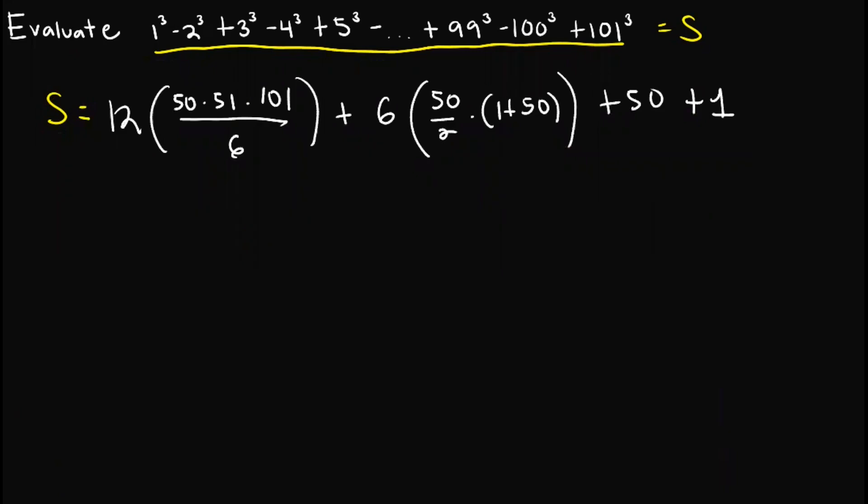So as you can observe here, this is just basic arithmetic that we need to do in order to solve the outcome for this problem. Now I will leave this to you as an arithmetic exercise or you can just use a calculator to plug in the values. But this one would give us, the first would give us 515,100 plus this one would give us 7,650, and combining these two would give us 51. So adding these three up would give us this final answer.